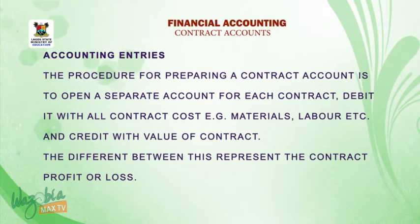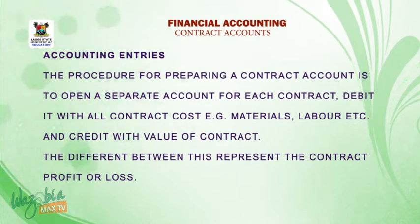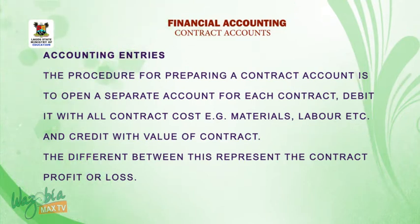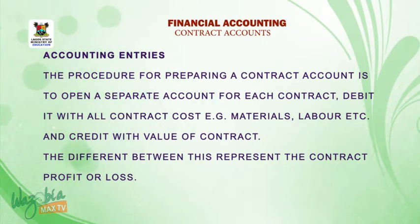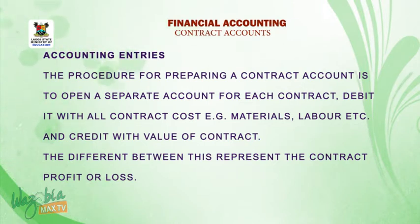Welcome back. Accounting entries. The procedure for preparing a contract account is to open a separate account for each contract. Debit it with all contract costs, e.g. materials, labour, etc., and credit with the value of the contract. The difference between these represents the contract profit or loss.